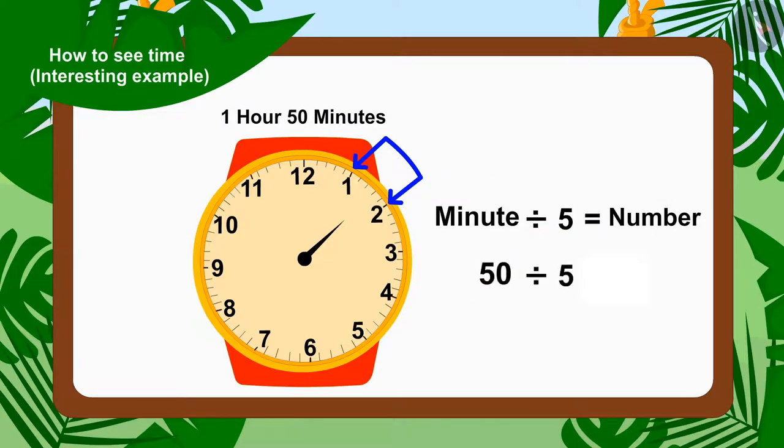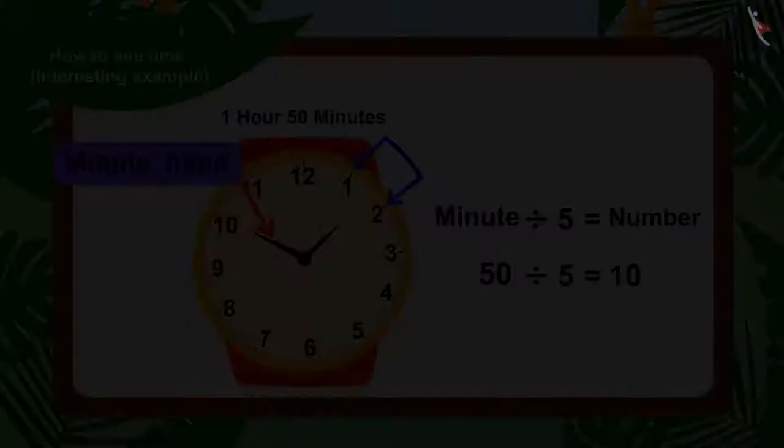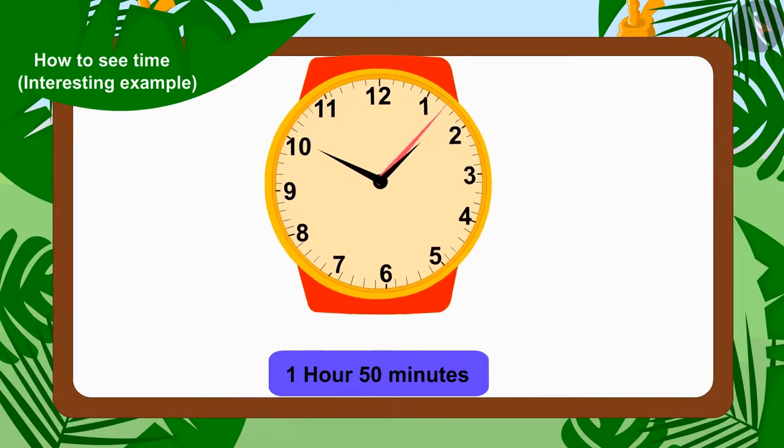So, 50 is divided by 5. How many does that make? Exactly, 10. Therefore, the minute needle will be on the number 10. In this way, we can show 1 hour 50 minutes.